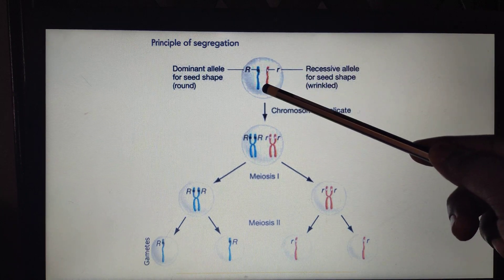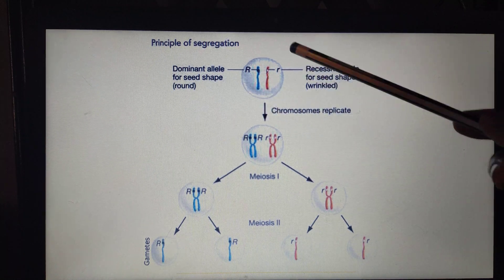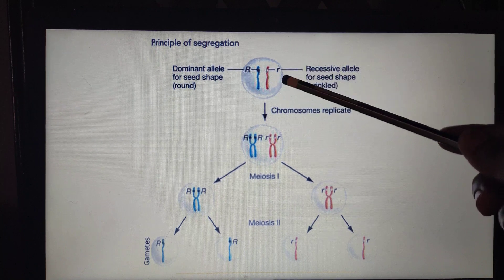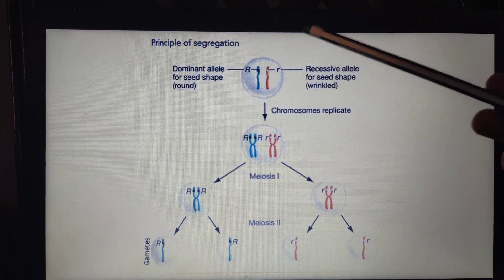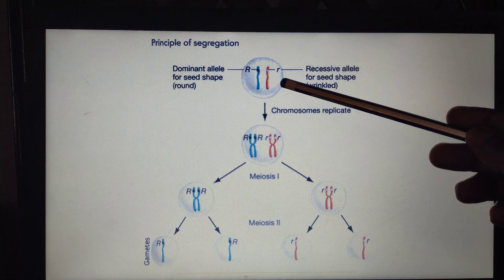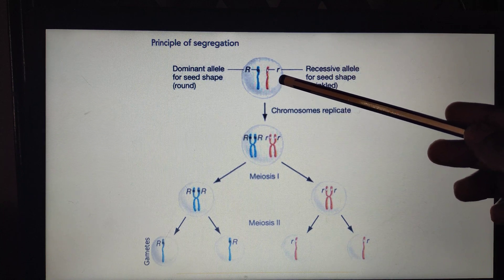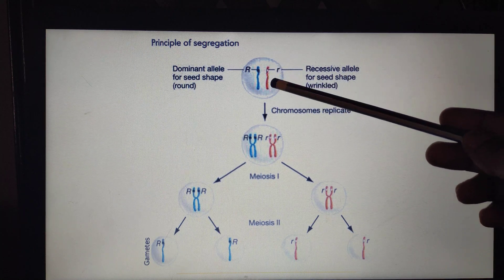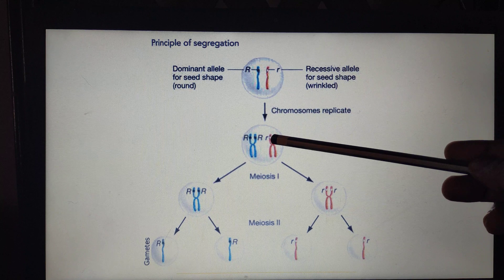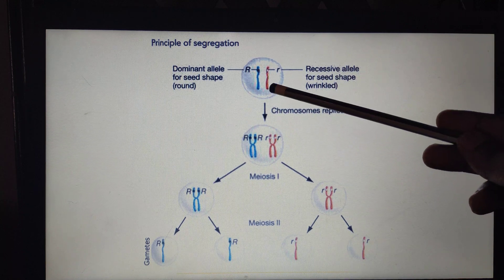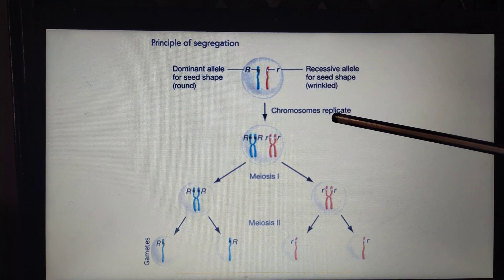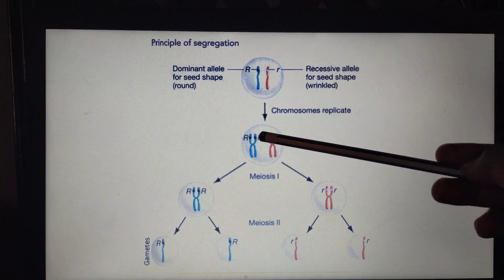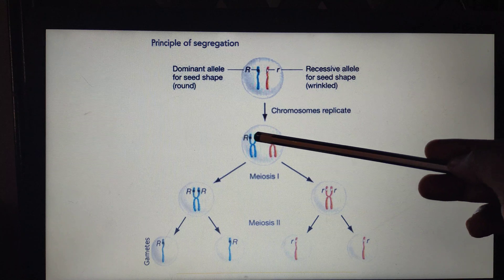This diploid cell undergoes gamete formation. Imagine this is a germinal cell, so it has to undergo meiosis to produce the gametes. Before meiosis, this chromosome — the diploid chromosome — gets doubled. As a result of doubling, that is replication, it duplicates. Chromosomes replicate or duplicate and produce the exact copy of the alleles. Here, only one copy is present in both the paternal as well as maternal chromosome.